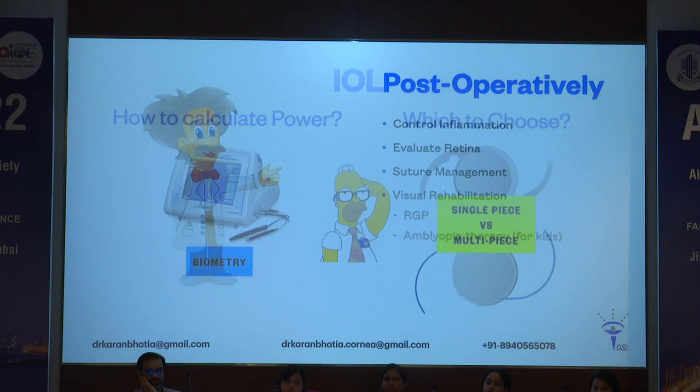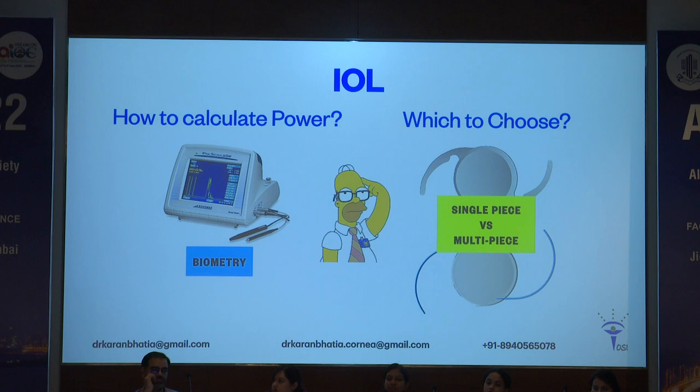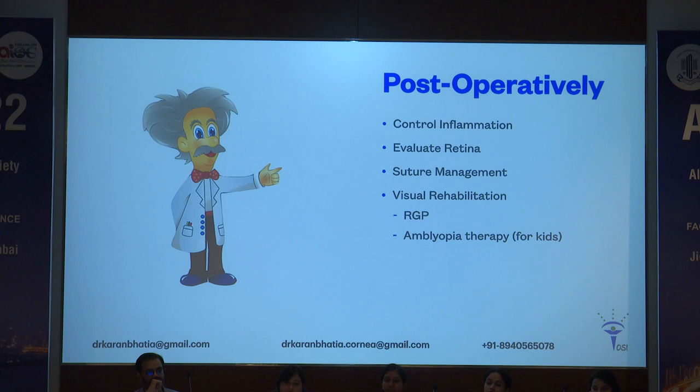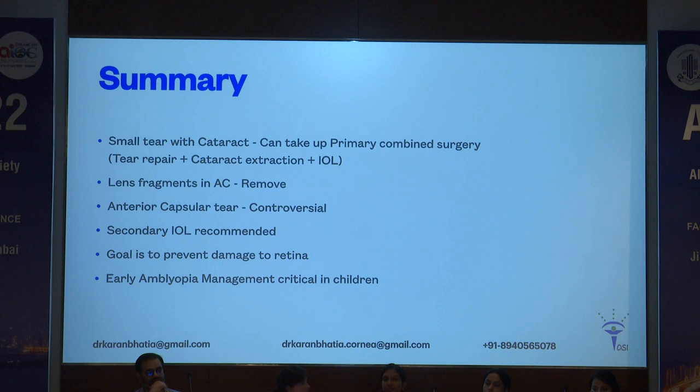For IOL calculation, sometimes you might have to use biometry from the other eye. Single-piece versus multi-piece will be decided according to capsule integrity. Post-operatively, control the inflammation, always evaluate the retina, manage sutures, and focus on visual rehabilitation. RGPs do really well in corneal tears — you can use scleral lenses or RGPs. If it's a child, amblyopia therapy is extremely important. To summarize: a small tear with cataract can be taken up for primary surgery; manage the lens fragments; secondary IOL is recommended; prevent damage to the retina; and early amblyopia management is critical for children.